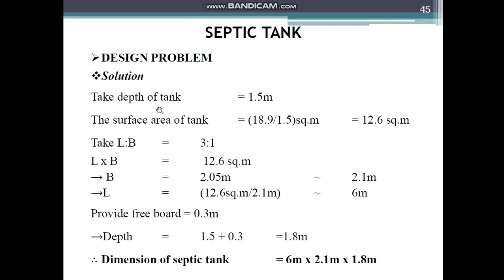Depth of tank is taken as 1.5 meters. Surface area = 18.9 ÷ 1.5 = 12.6 square meters. Taking the length-to-width ratio as 3:1, we get B = 2.1 meters and L = 6 meters. Assuming a freeboard of 0.3 meters, total depth = 1.5 + 0.3 = 1.8 meters. So the final dimensions of the septic tank are 6 m × 2.1 m × 1.8 m.